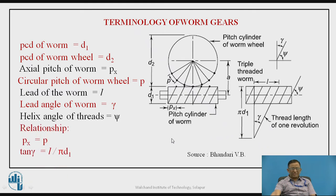An important relationship for kinematic power transmission is that the linear motion of the worm is converted into rotary motion of the worm wheel, and that's why the axial pitch of the worm must equal the circular pitch of the worm wheel. So Px equals P — that condition must hold. From the triangle, tan of gamma equals L divided by pi D1, which is how we calculate the lead angle gamma.